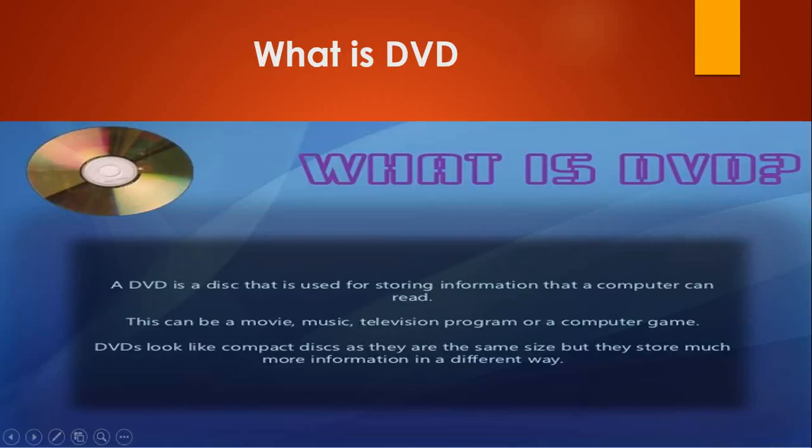Types include CD-ROM, rewritable CD, and DVD-ROM with tremendous storage capacities. What is a DVD? A DVD is a disk used for storing information that a computer can read. This can be a movie, music, television program, or a computer game. DVDs look like compact disks as they are the same size, but they store much more information.